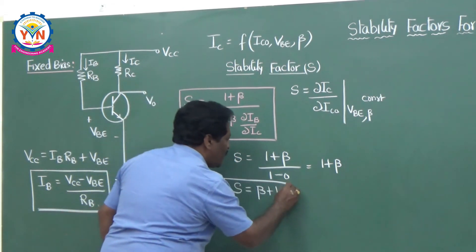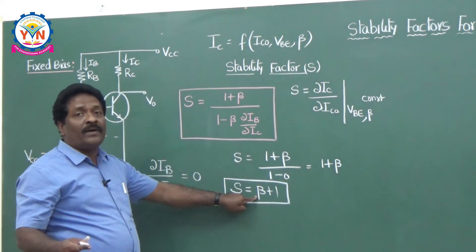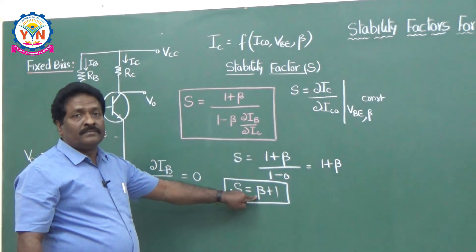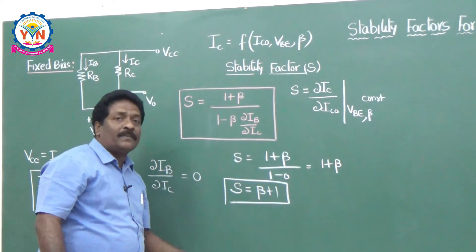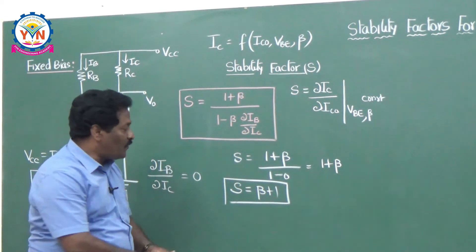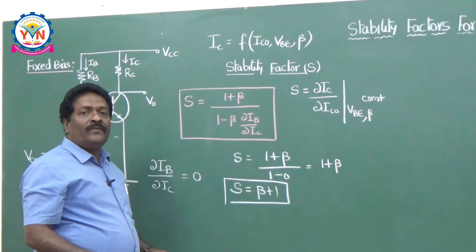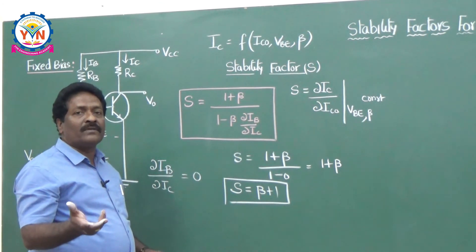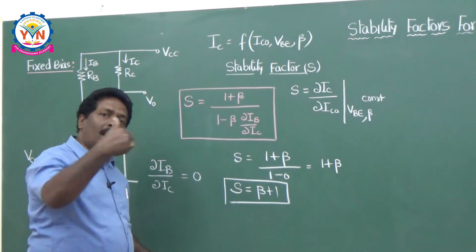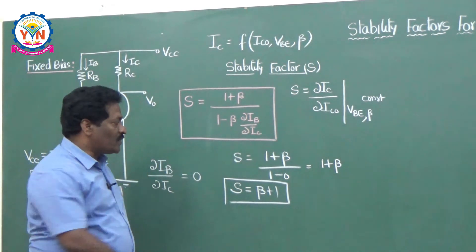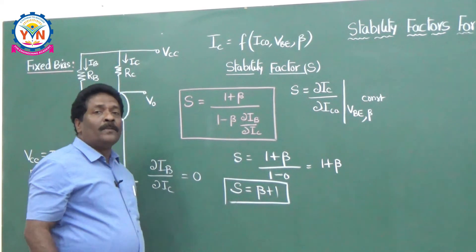Since the value of beta can be in the hundreds, the stability factor is very large — meaning less stable. From this expression, you can immediately conclude that the fixed bias circuit is not a stable circuit: the operating point is always shifting either upwards or downwards. That is the reason it has poor stability, and that is why people do not use it that much.